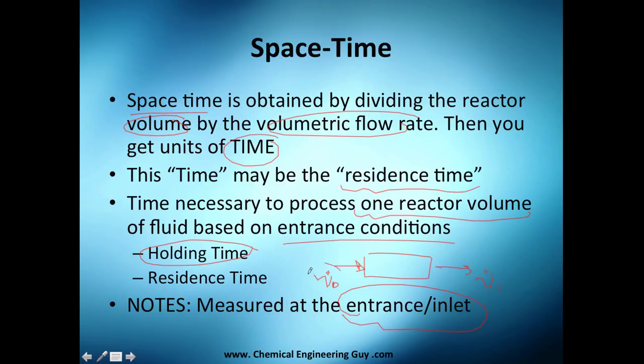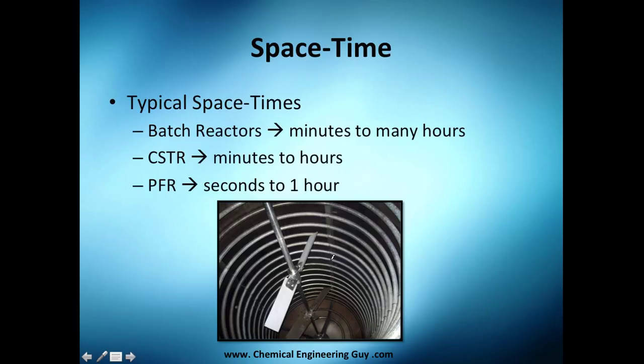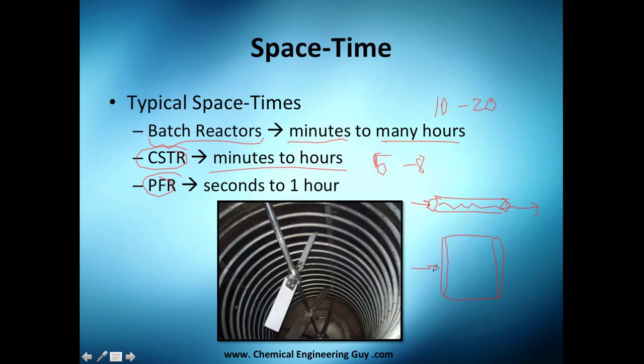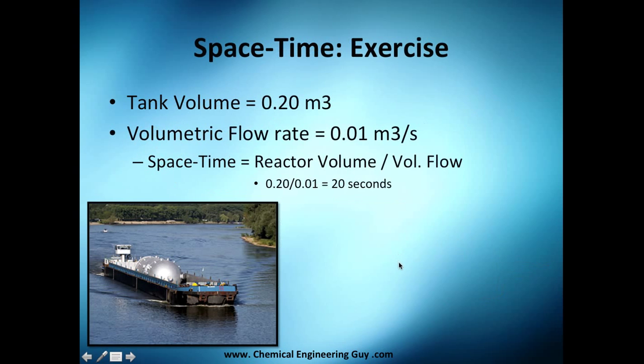Typical spacetimes: batch reactors are minutes to many hours, maybe 10 to 20 hours. CSTRs are minutes to hours, not that much, maybe maximum five to eight hours. PFR is about seconds to one hour. Why seconds? Because you are in a pipe, so you just go, mix, and go out. I tell you one hour because maybe it's a huge reactor - many reactors are very large. They go in a small pipe from momentum, then to this huge diameter, so they go slower and slower. That's essentially spacetime of typical reactors.